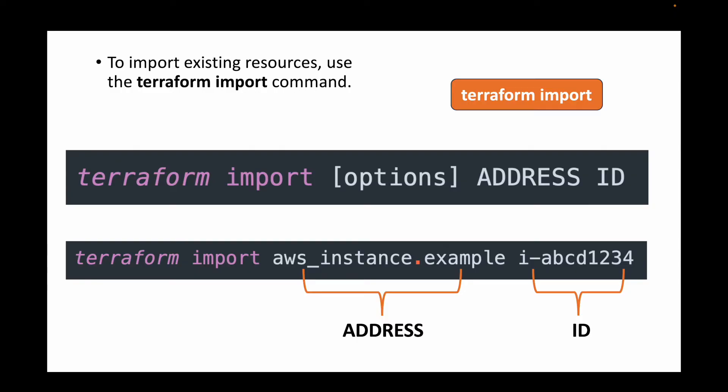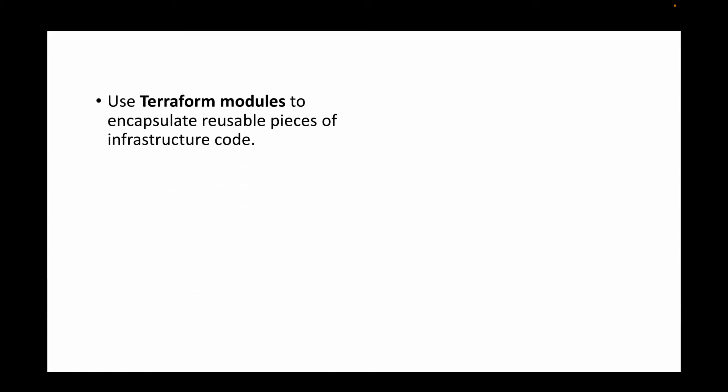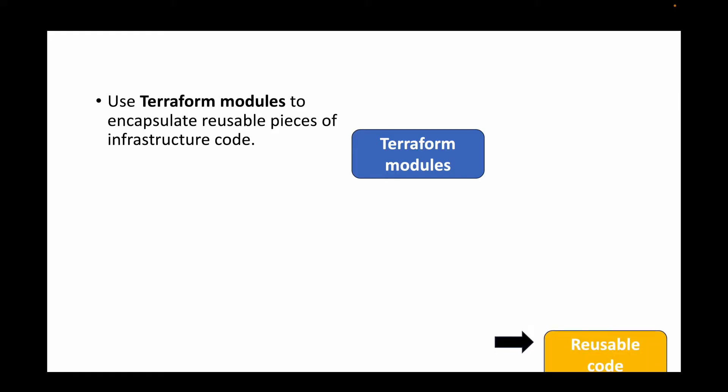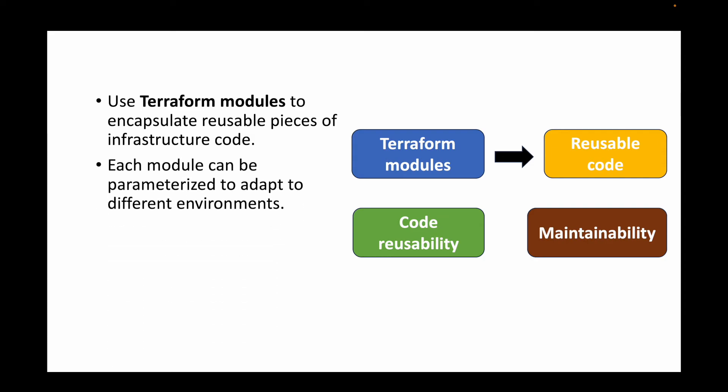The next scenario is: you're working with multiple environments — dev, prod, and so on — and you want to avoid duplicating code. How would you structure your Terraform configurations to achieve code reusability? This is where Terraform modules come in. Modules promote code reusability: you write the code once and call it as many times as needed. When calling modules, you can parameterize them based on the environment, passing parameters for dev or prod accordingly.